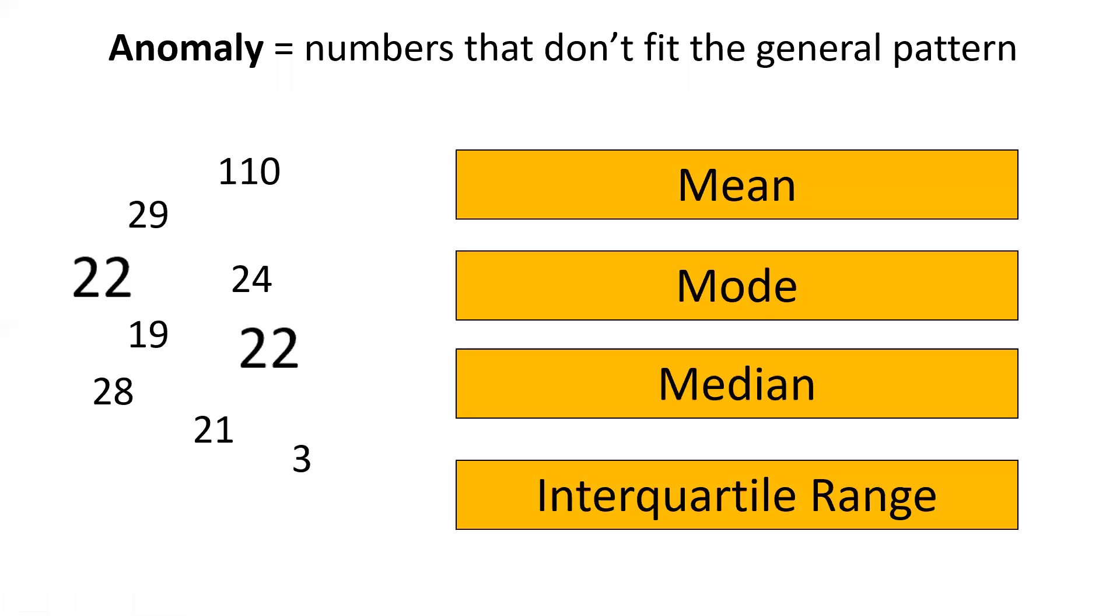First of all, an anomaly is a number that doesn't fit the general pattern. If we have a look at our data over here again we can see that most of the numbers are roughly around 20, somewhere between 19 and 29. However there are two very obvious anomalies in this data.